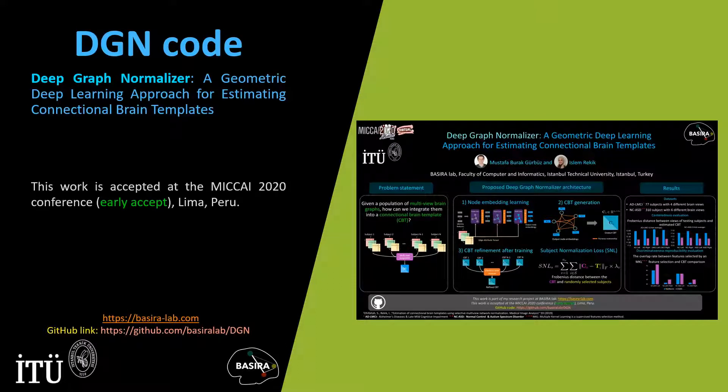Hi. In this video, I will show you how to run our DGN code to estimate connectional brain templates for a given population of multi-view brain networks. This work is accepted at MICCAI 2020 conference.